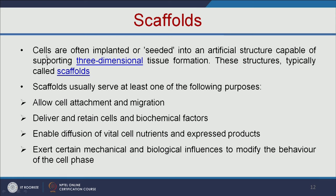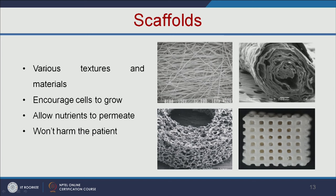The scaffold is an artificial structure into which cells are implanted or seeded, capable of supporting three-dimensional tissue formation. The scaffold should allow cells to attach, deliver and retain cells and biochemical factors, enable diffusion of vital cell nutrients, and exert mechanical and biological influences to modify cell behavior. We can have scaffolds in various structures and materials depending on the tissue we want to grow.